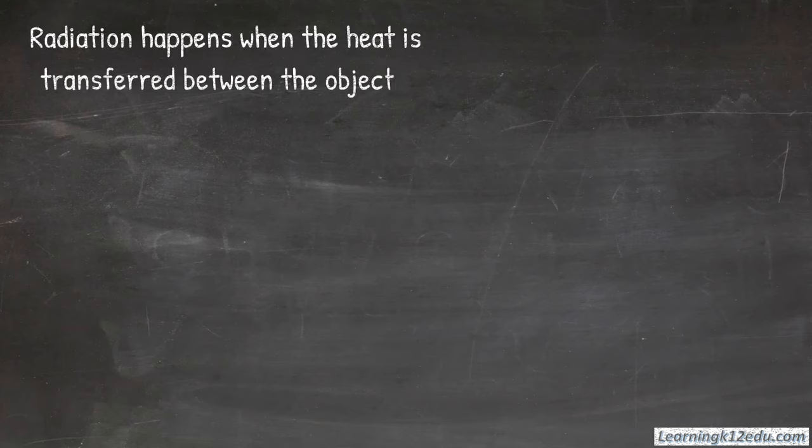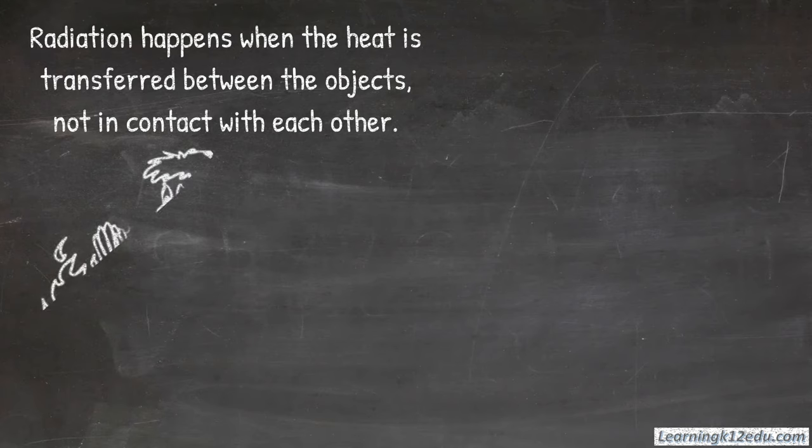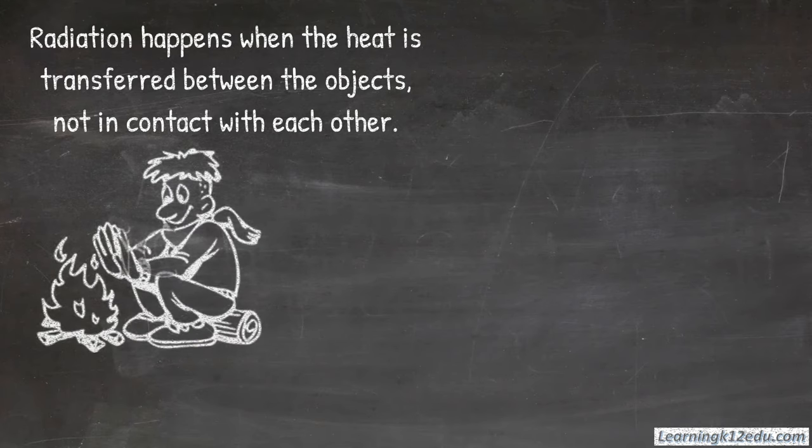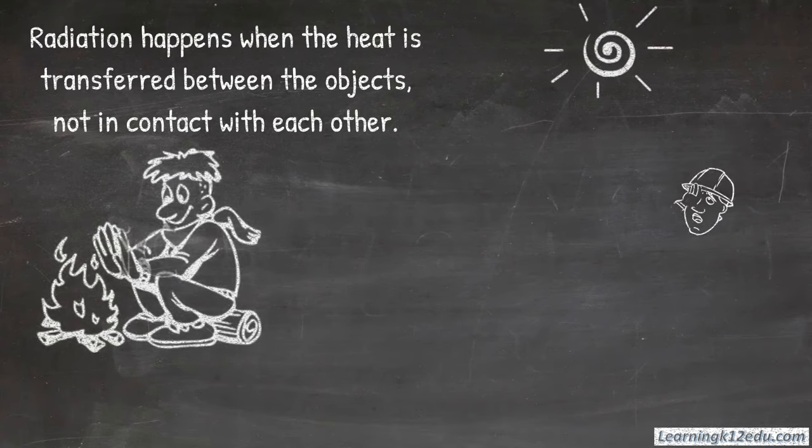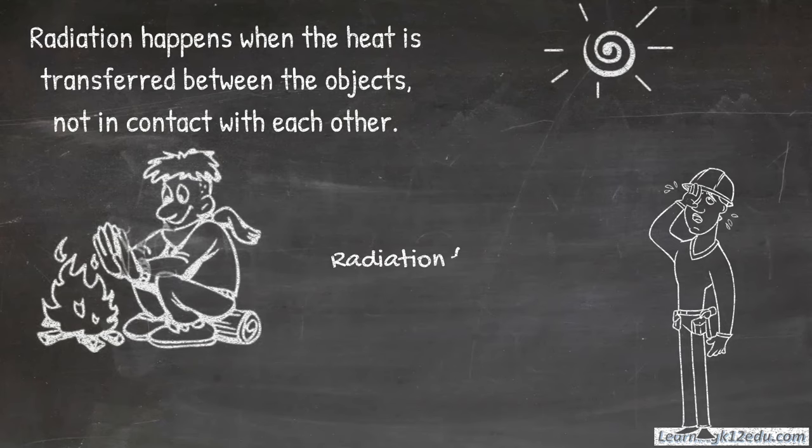Radiation happens when the heat is transferred between objects not in contact with each other. For example, warming up in a bonfire or sweating in the heat of the sun. Radiation from the sun gives Earth most of its heat.